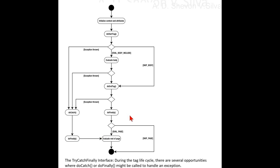The JSP specification guarantees that the doatch method will be called if an exception is thrown in the doStartTag method, the tag body content, or the doEndTag method. Additionally, if the tag handler implements the IterationTag or BodyTag interface, the doatch method will be executed if an exception is thrown within the doAfterBody and doInitBody methods respectively.